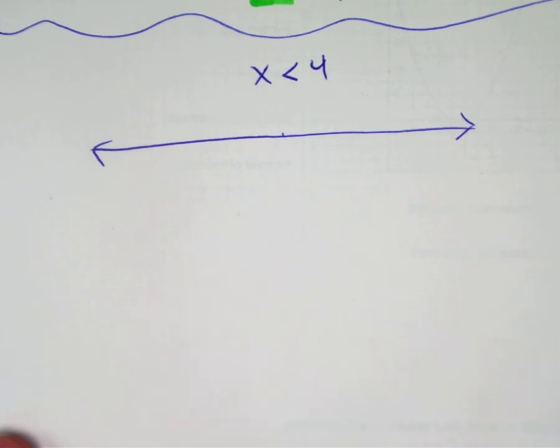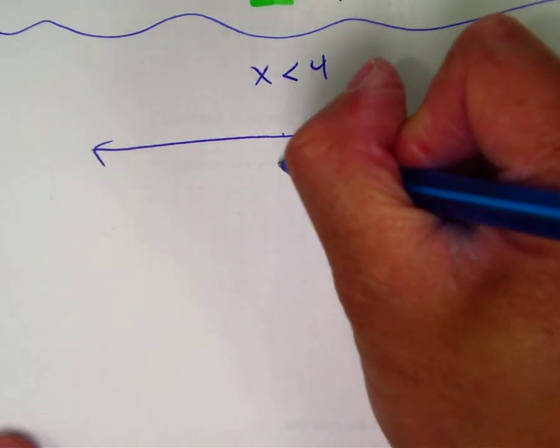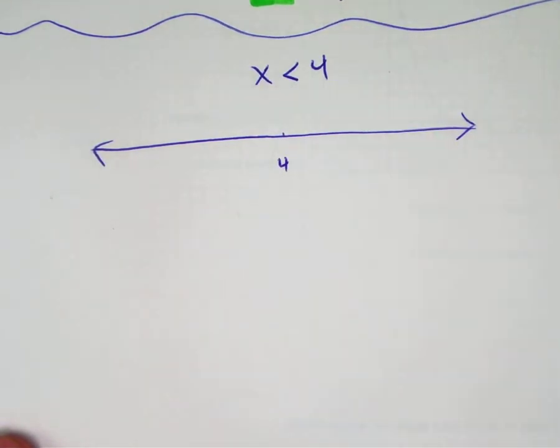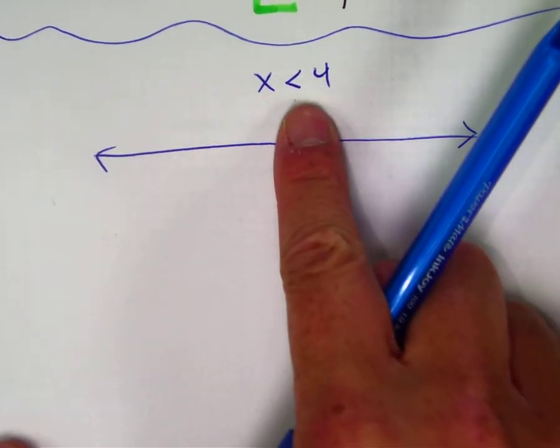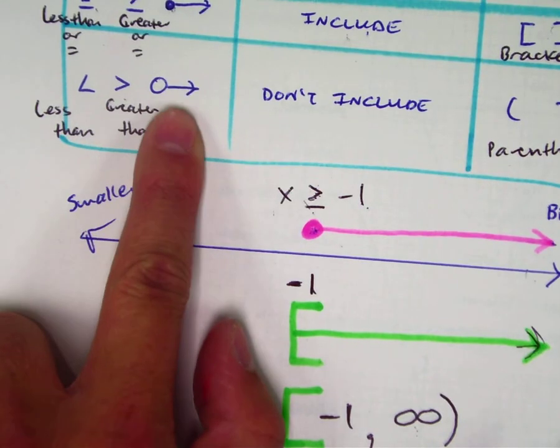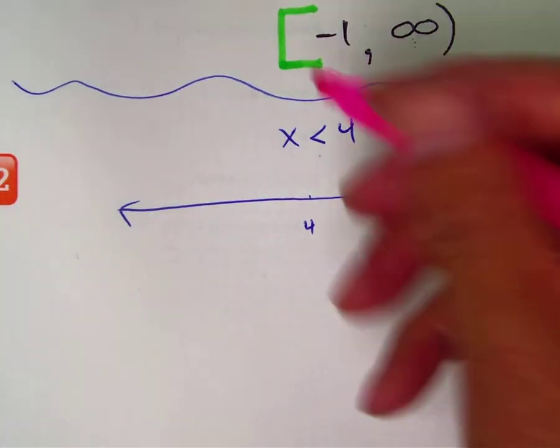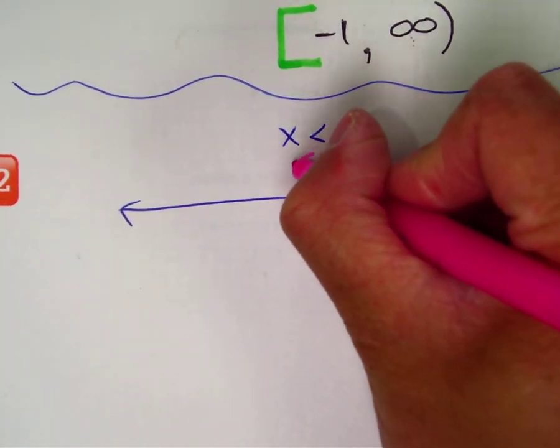Class, what's the only number there? 4. Write it down. Show me with your fist open or closed fist. Okay, I don't have an equal sign here, so that means it's going to be an open circle. Make it a very clear open circle.